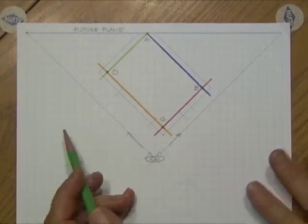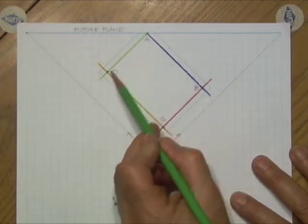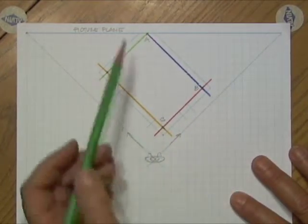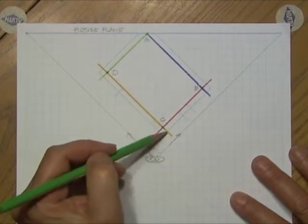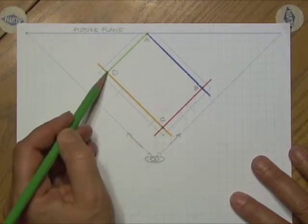You'll notice I have color coded the walls, so the back wall to the left is green, the back wall to the right is blue, the front wall to the right is red, and the front wall to the left is yellow.